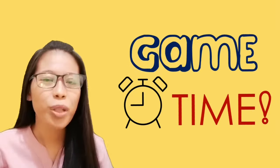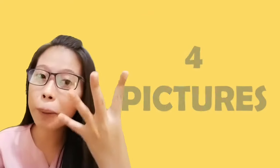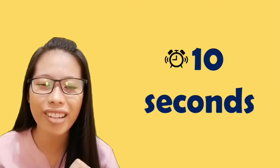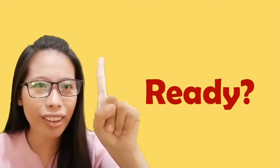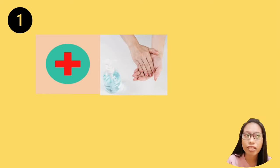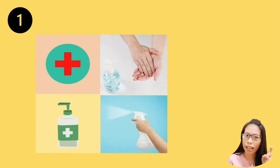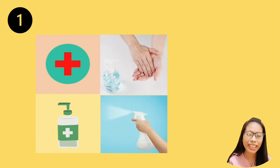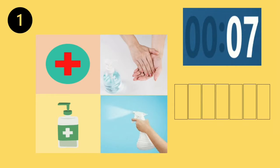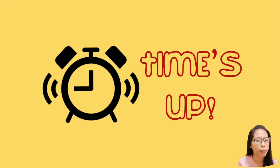It's game time! We will play 4 Pics, 1 Word. I will give you 4 pictures and you will guess what they're all about in just one word. You have 10 seconds to guess the correct answer. We have here a cross sign, a hand washing, a green bottle with a cross, and someone spraying. What word best describes the pictures? The word has 7 letters. This one is alcohol.